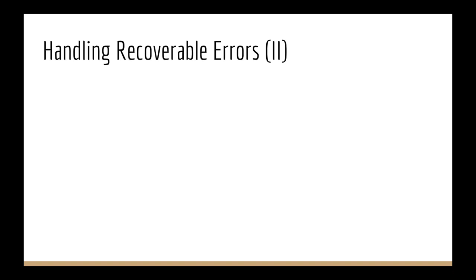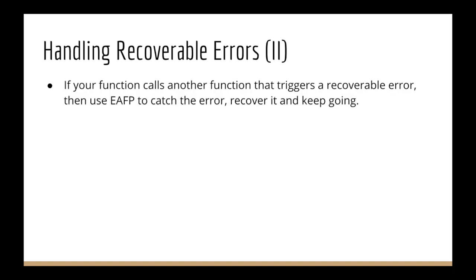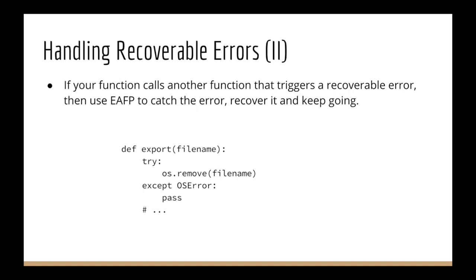Another situation with recoverable errors: you call a function and the other function returns an error — it was unrecoverable for that function, but you can recover from it. This is the case I don't like, because Python is so heavily centered on exceptions. The only way to keep going when you receive an exception is to use a try-except block. This is ugly code in my opinion. I always try to keep a small number of lines inside a try-except — usually one or two, no more — to minimize the damage.